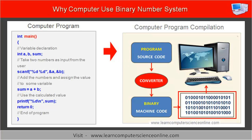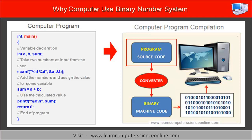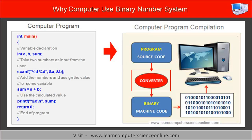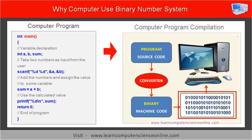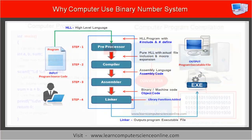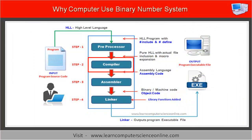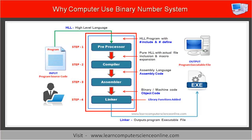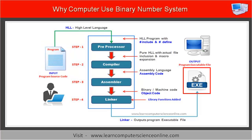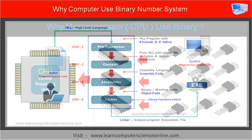So it doesn't really matter which high-level programming language you choose to write the program code, because eventually all high-level programs are required to be converted to binary code. This conversion is done by using a special program called a compiler. This conversion process is called program compilation. During program compilation, high-level programs are converted by the compiler into machine code instructions in binary that can be directly executed by the computer processor.